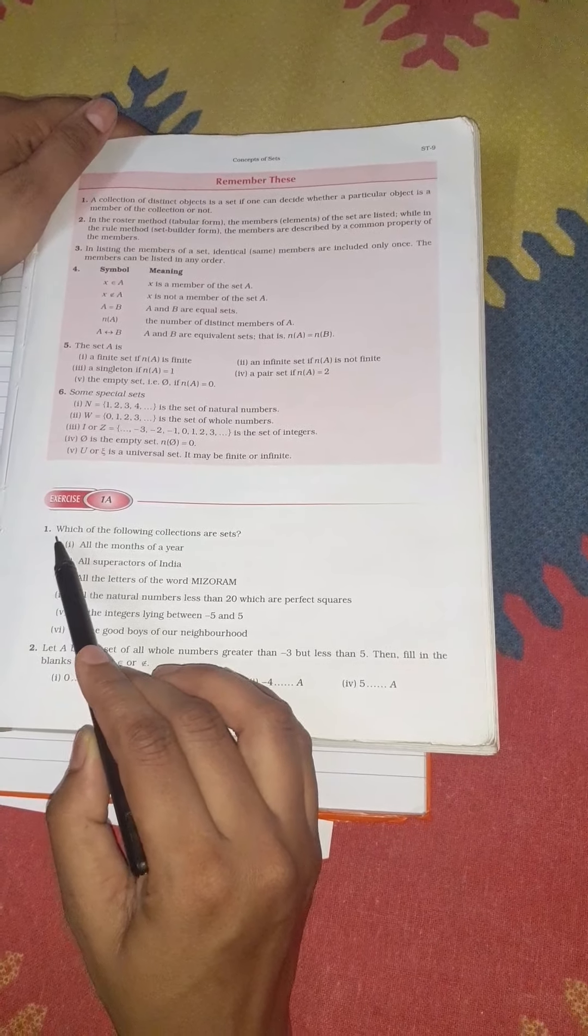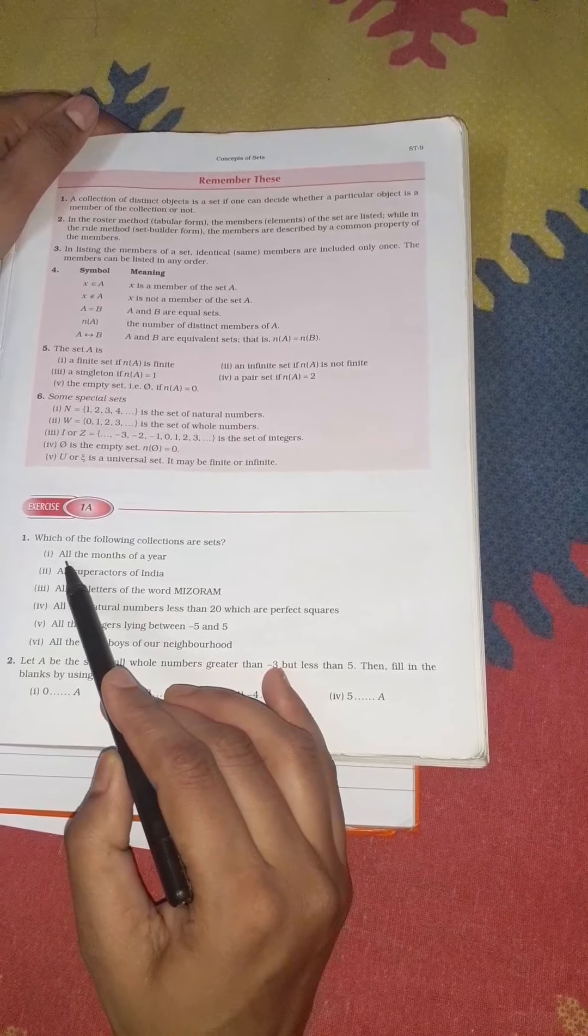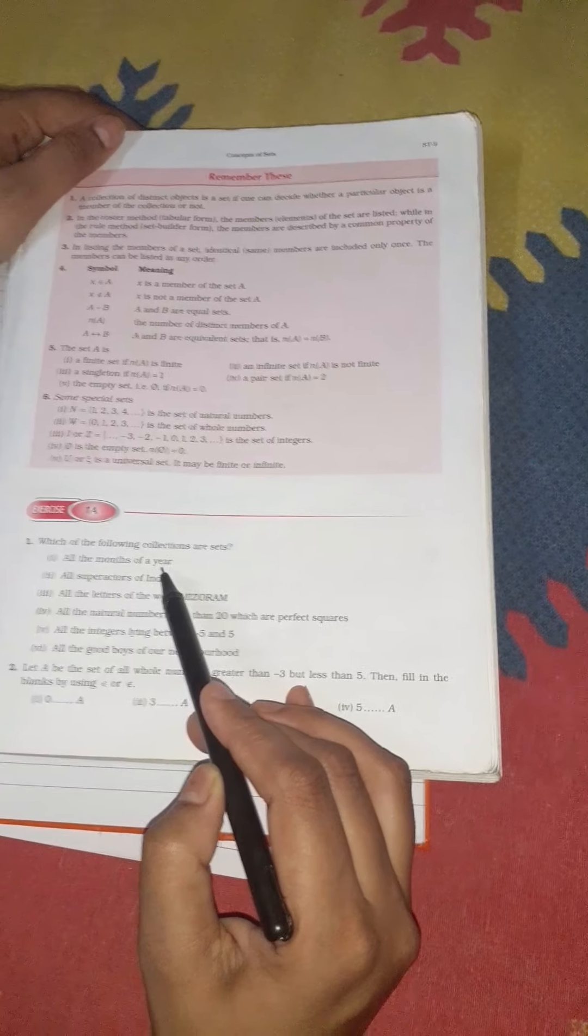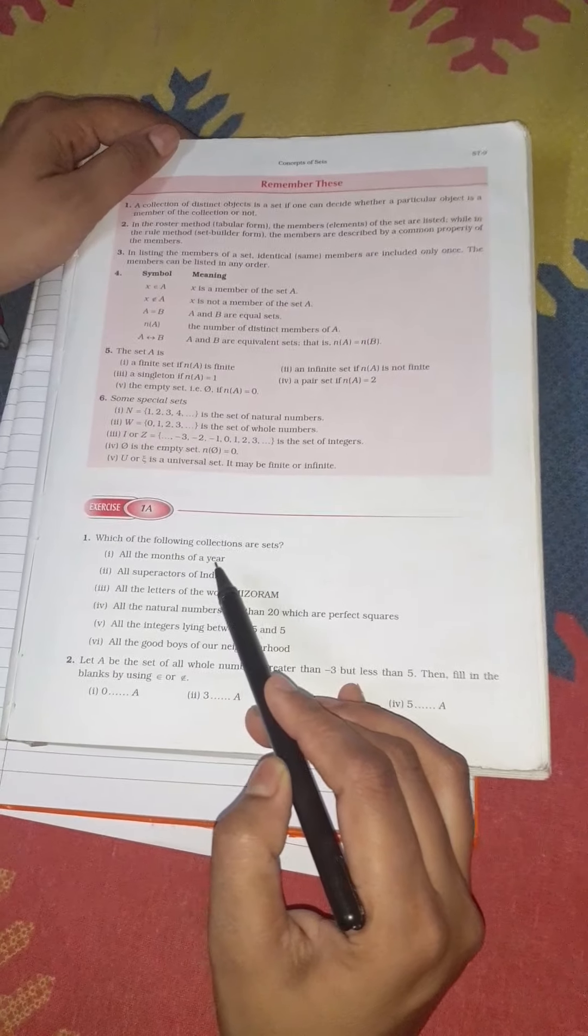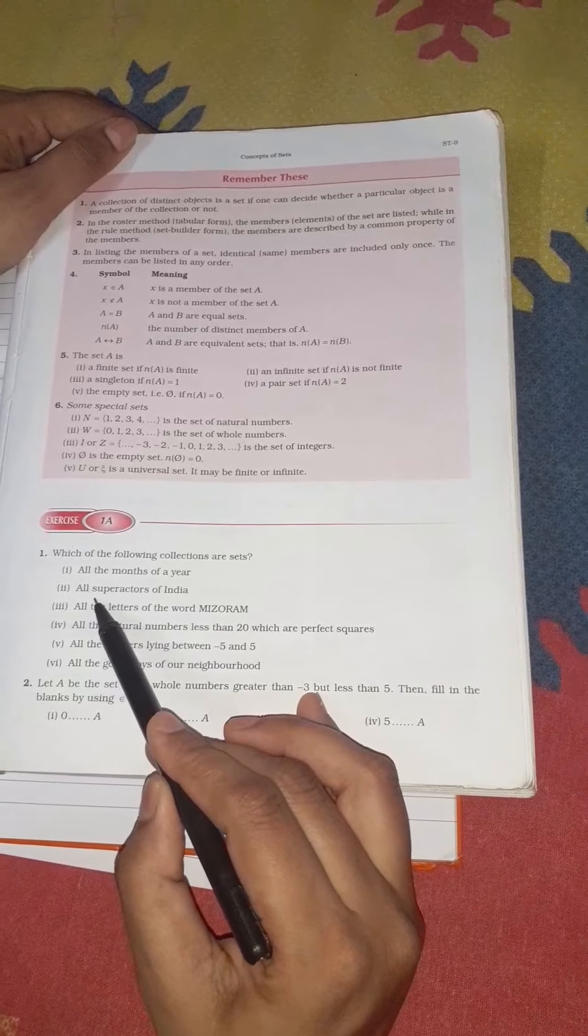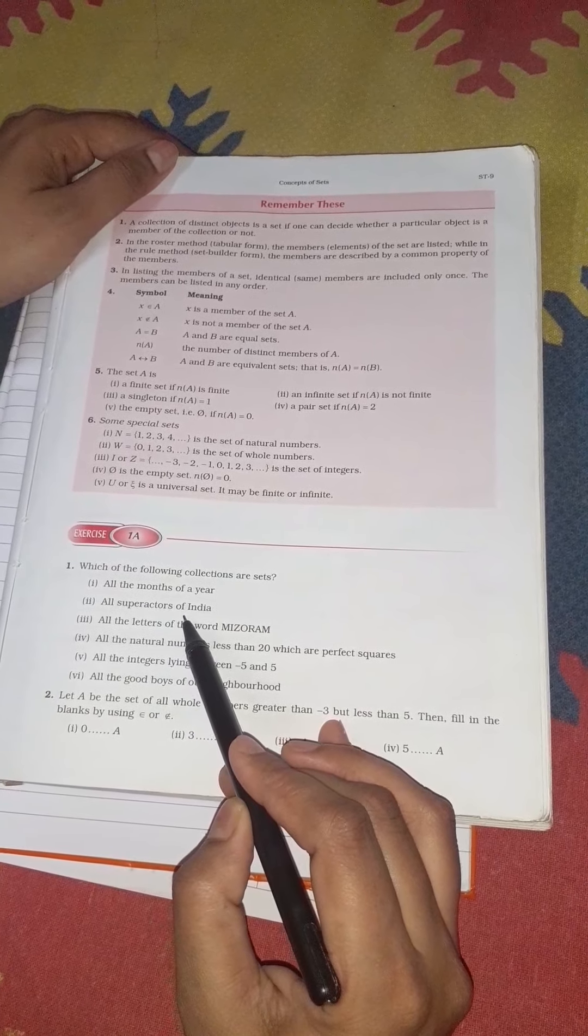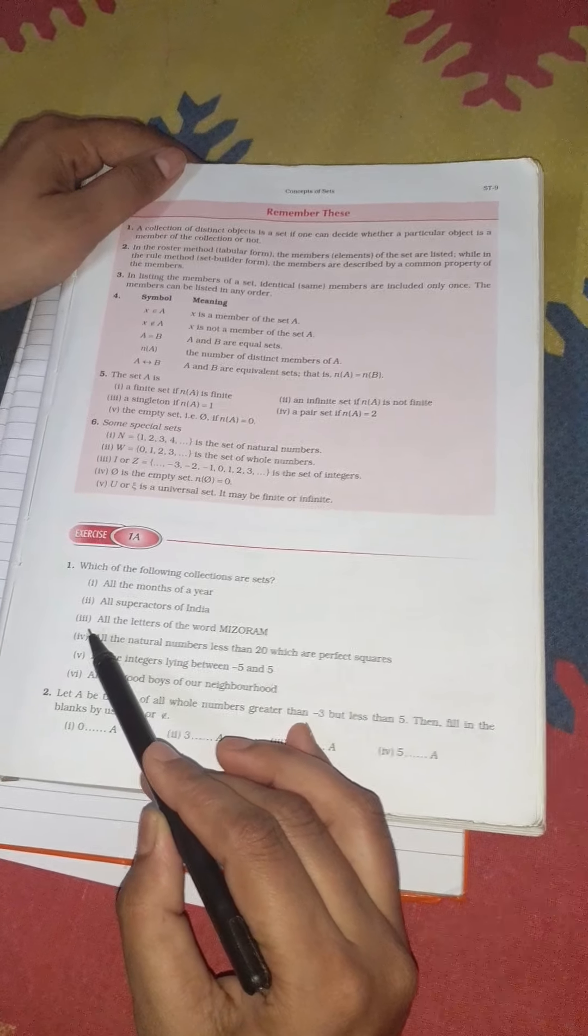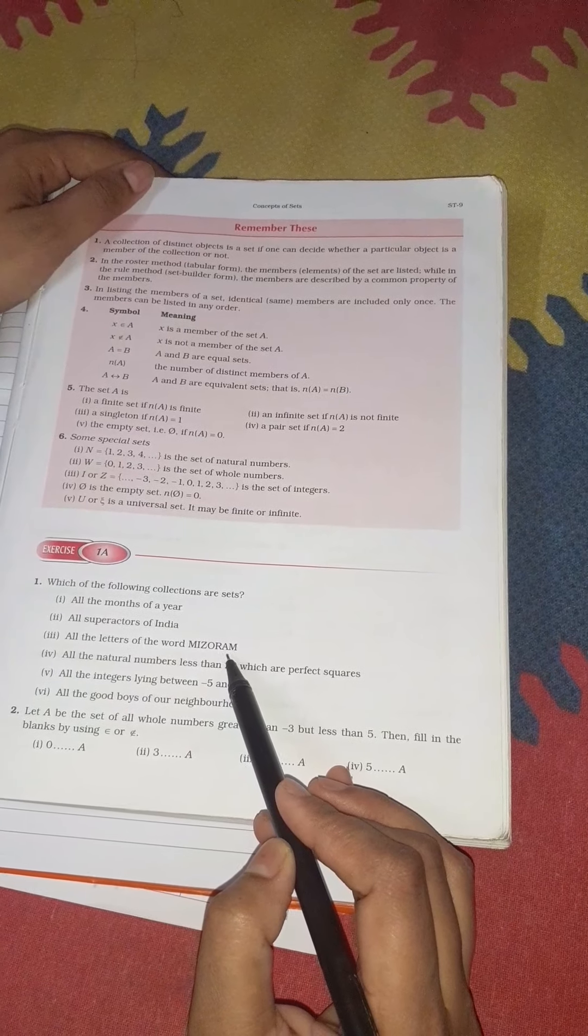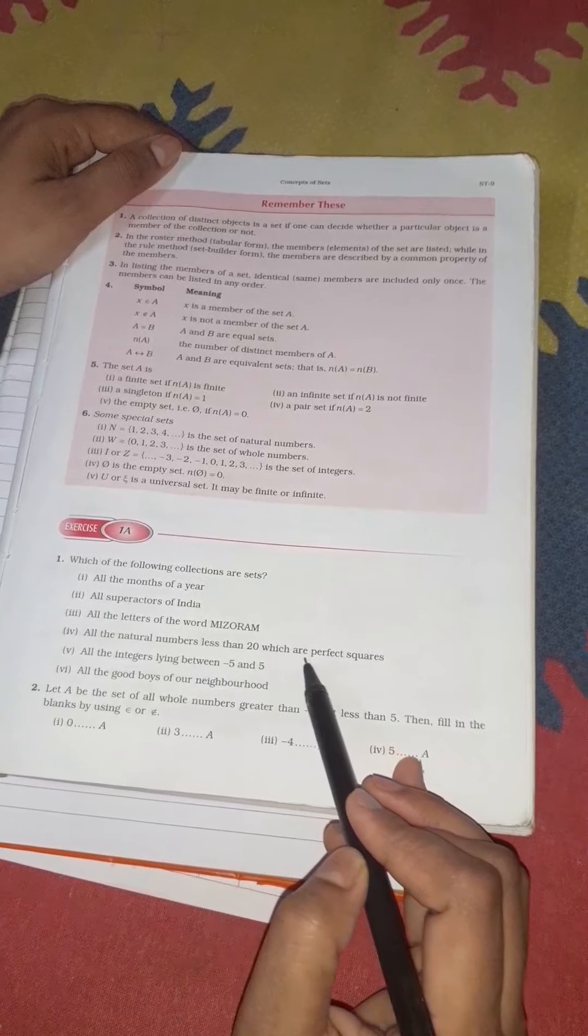The first question is: which of the following collections are sets? All the months of a year - yes, we can count the months, so it is a set. All super lecturers of India - no, we can't count it, so it is not a set. All the letters of the word - yes, we can write it in a set form, so it is a set.